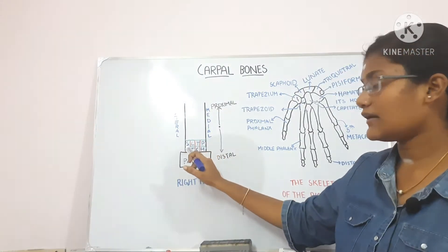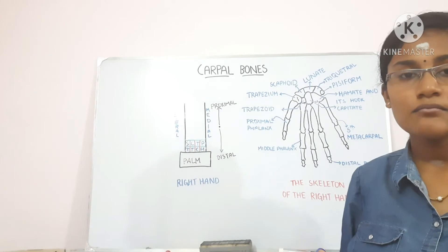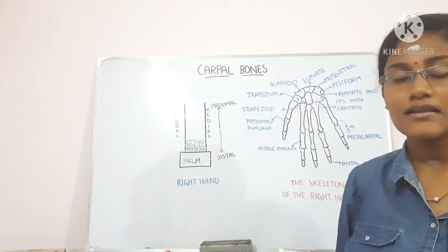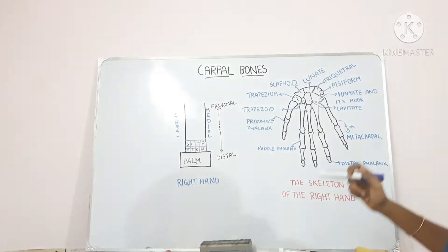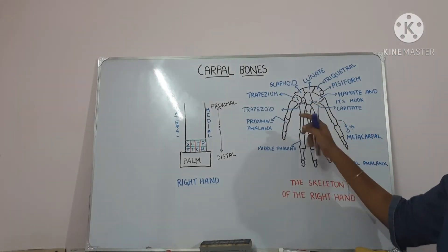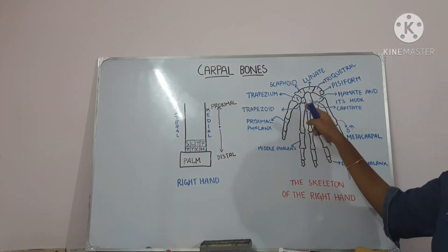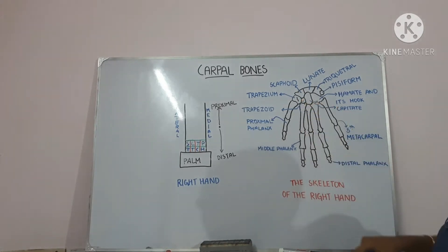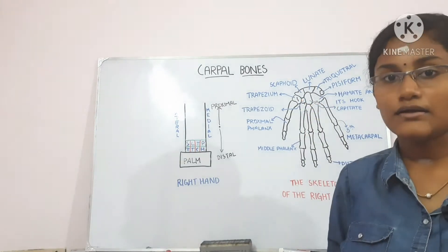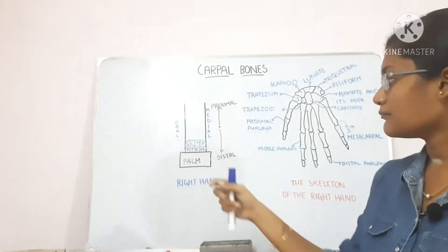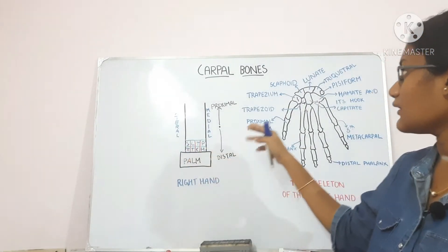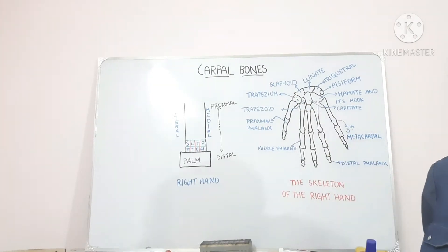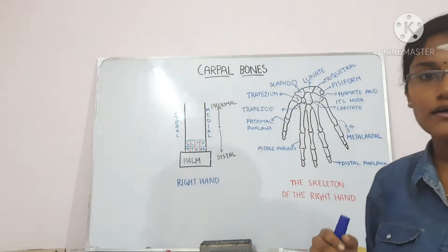Now let us talk about the trapezium bone. The trapezium bone is quadrangular and anteriorly it has a crest and a groove. It is quadrangular meaning it has four sides and you can see a marking over here that is called the crest of the trapezium. It also has a groove anteriorly. The trapezium on its superior aspect has a concave or convex articulation surface.